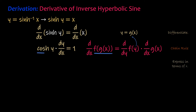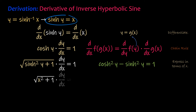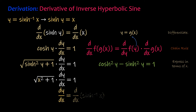Afterwards, express hyperbolic cosine of y in terms of x. Use a hyperbolic identity to express hyperbolic cosine of y in terms of hyperbolic sine of y. Then, substitute x equals the hyperbolic sine of y. Divide both sides of the equation by the square root of quantity x squared plus 1. Therefore, the derivative with respect to x of the inverse hyperbolic sine of x is equal to 1 all over the square root of quantity x squared plus 1.